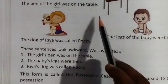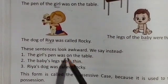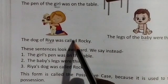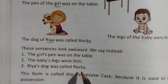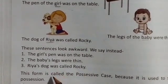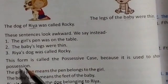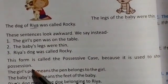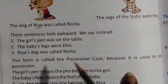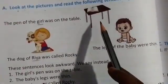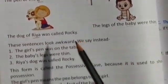Instead we say: the girl's pen was on the table, the baby's legs were thin, Ria's dog was called Rocky. Hum in sentences ko is tarike se bhi likh sakte hain. This form is called the possessive case because it is used to show possession — pen kiski upar rakha hua hai, table ke upar — position show kar raha hai.